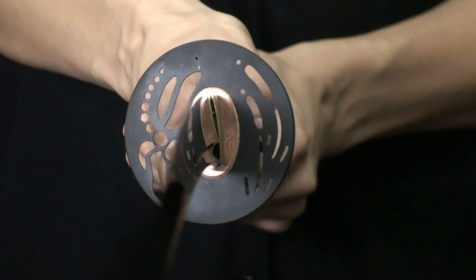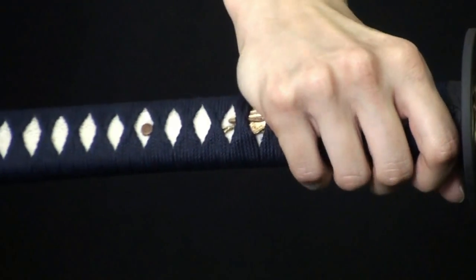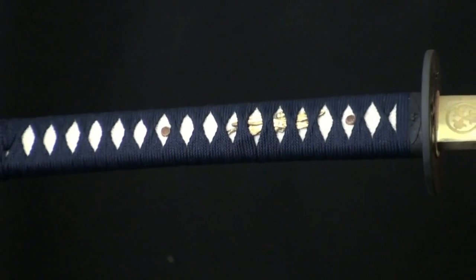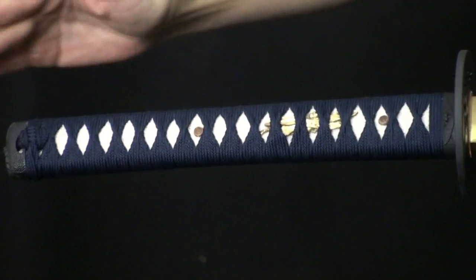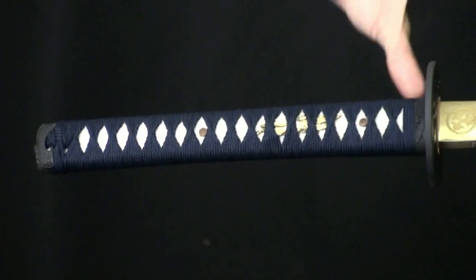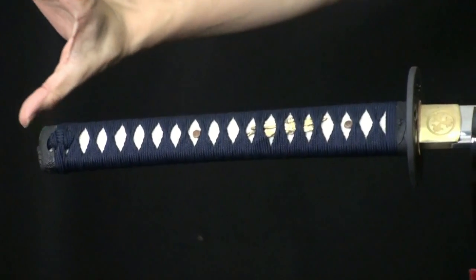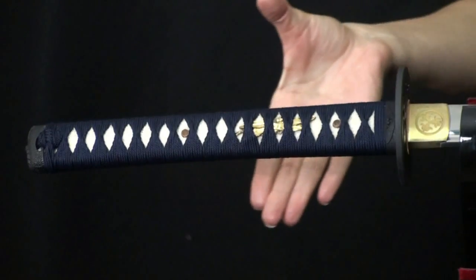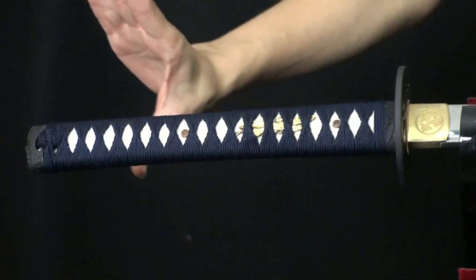It's really quite nice. And then as we move on, we have the Fuchikashira, and it's a dragonfly theme. The Tsuka is 10.5 inches long. It is a blue Ito with alternating crossovers and crisp white samegawa. Two smoked bamboo mekugi.